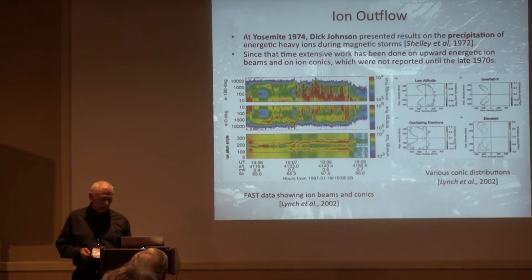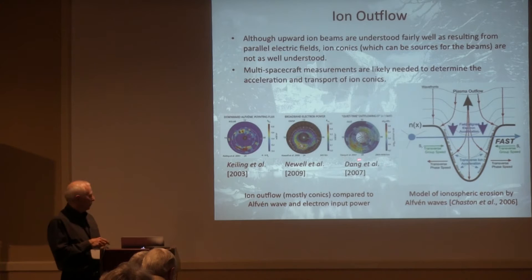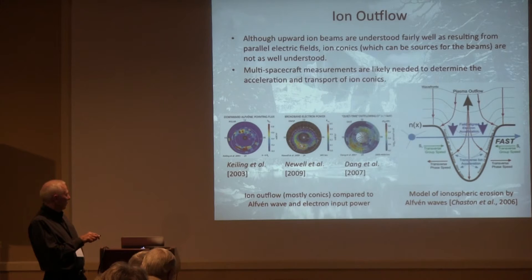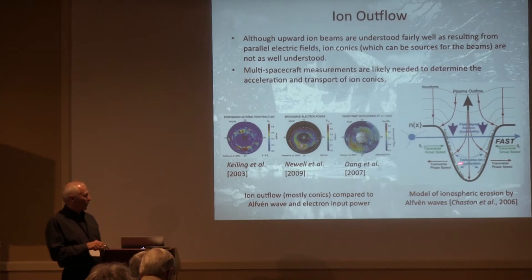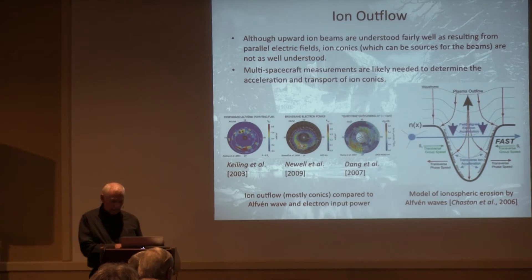Here's an example of current work. Here's the outflowing O-plus — this is mostly conics from FAST. There's the night side and day side. If it's associated with broadband electron power — electron precipitation — you have this peak here. If it's associated with Alfvénic Poynting flux, you have a peak on both day side and night side. Then Chaston talks about a density cavity and how that might even give rise to conics inside the density cavity as well as outside where we normally think of them. So this is an active area of research.